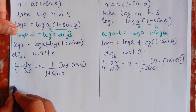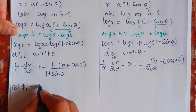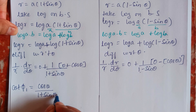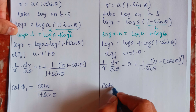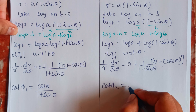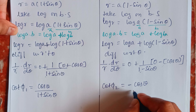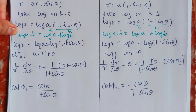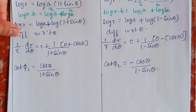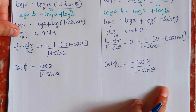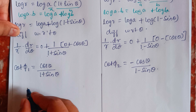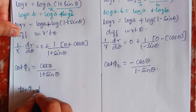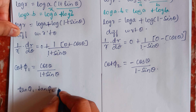From the first curve, this gives cot φ₁ = cosθ/(1 + sinθ). From the second curve, cot φ₂ = −cosθ/(1 − sinθ). Now, to prove that the pair of curves intersect orthogonally, we can also use the condition tan φ₁ · tan φ₂ = −1.